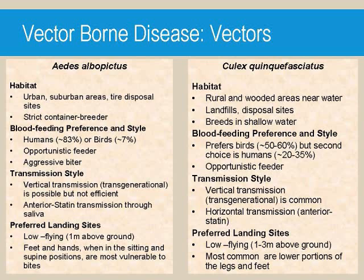After a mosquito feeds upon an infected bird, the virus resides in the mid-gut of the mosquito until it escapes to the salivary glands. Once a mosquito is infectious, the vector can then transmit the disease to humans, birds, and mammals, causing a chain of infection. This is called horizontal transmission. Another form of transmission is transgenerational transmission, which is when the virus is transmitted from the parent vectors to their progeny. This perpetuates the disease in times of vector dormancy.